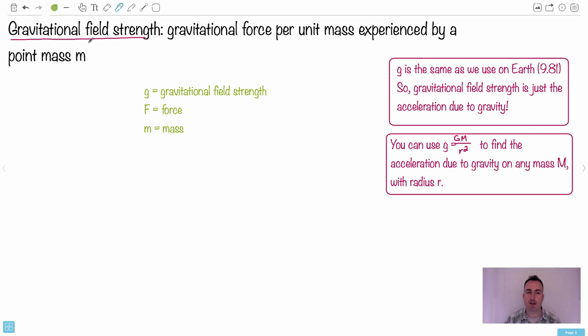Now we have something more interesting called the gravitational field strength. It's the gravitational force per unit mass experienced by a point mass. There's a nice easy equation for it. It goes like this: g equals F over m. This is the equation you get in your data booklet. We have to be a little bit careful here.